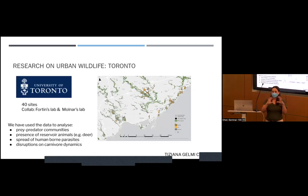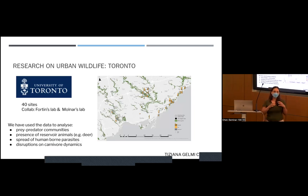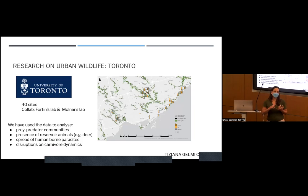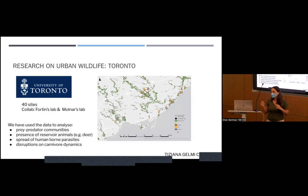I lead the camera trap collection group at the University of Toronto. This is a collaboration between two labs — the Feau and the Molnar's lab — and we have around 40 sites across Toronto. We're using this data to investigate prey-predator communities, where our animals rest — for example, deer — the spread of human-borne parasites that can be spread from wildlife to dogs to people, and any disruptions in carnivore dynamics. Coyotes and foxes are a big focus of our research.